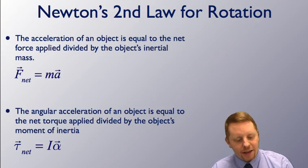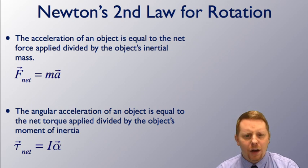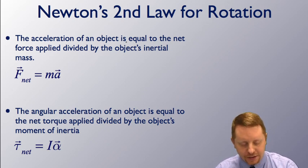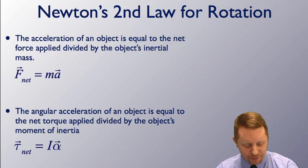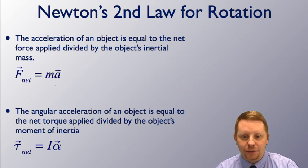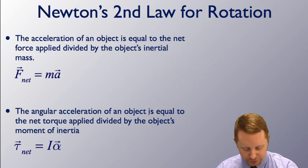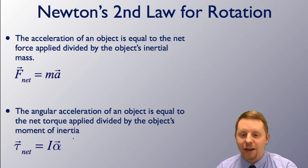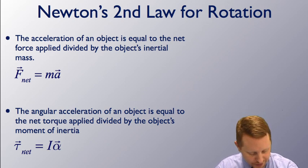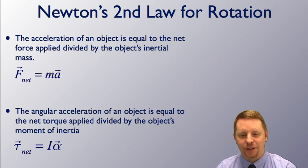Taking a look at Newton's second law: the acceleration of an object equals the net force divided by its inertial mass, or net force equals mass times acceleration. The rotational corollary states that the angular acceleration alpha of an object equals the net torque applied divided by the object's moment of inertia, or net torque equals moment of inertia times angular acceleration.